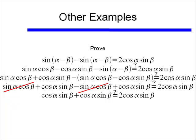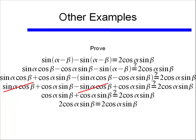Well if I combine those two terms on my left hand side, I find out that yes indeed, 2cos(α)sin(β) = 2cos(α)sin(β). So I have proven this identity.